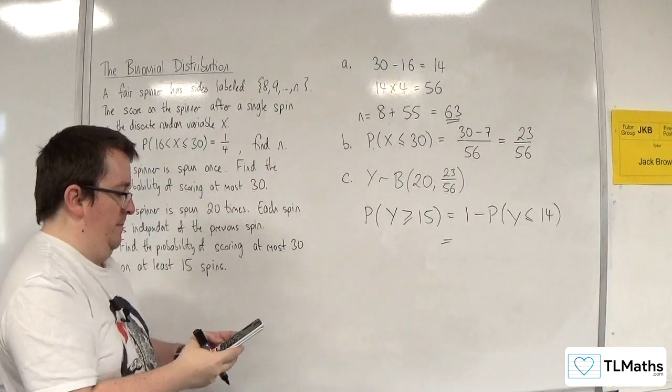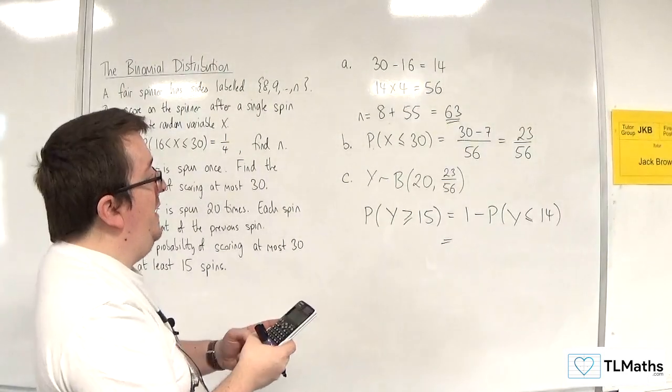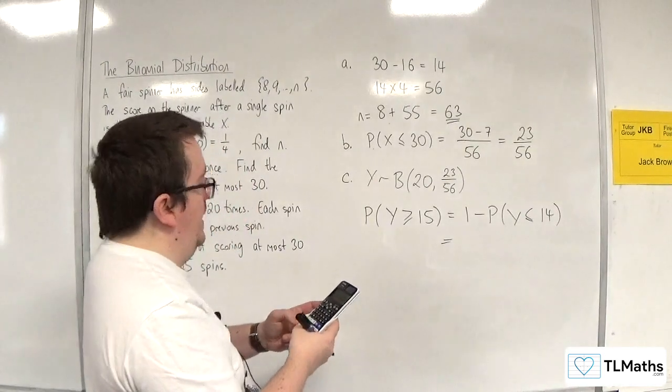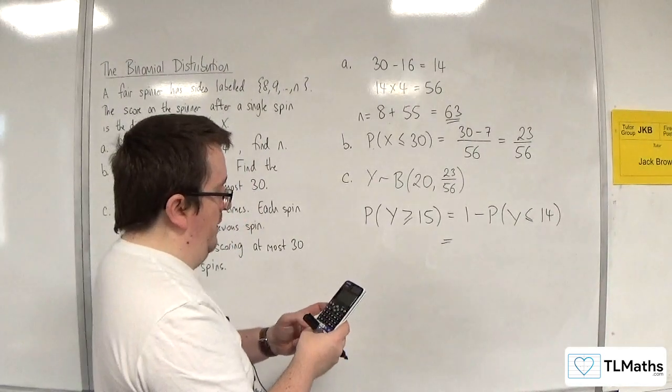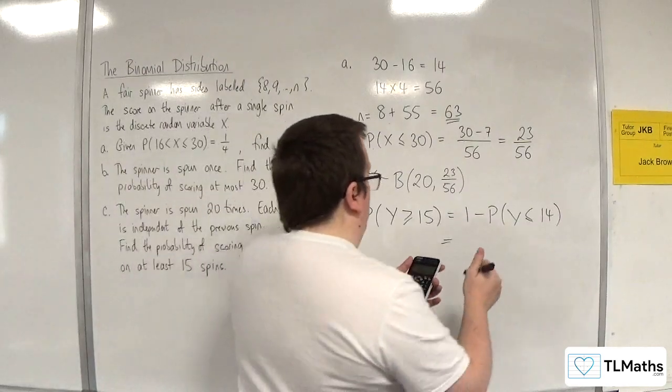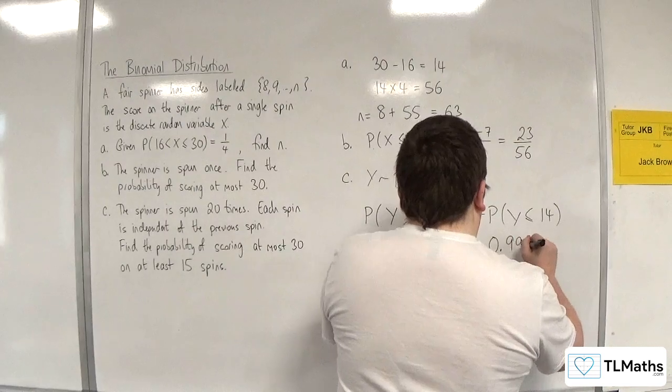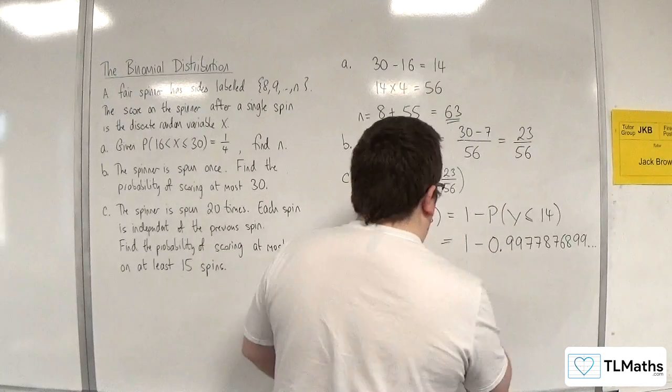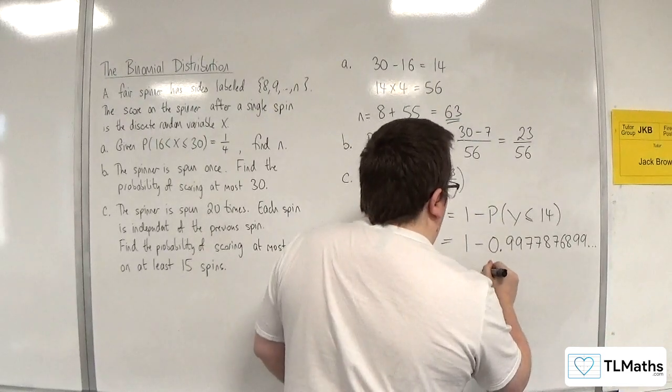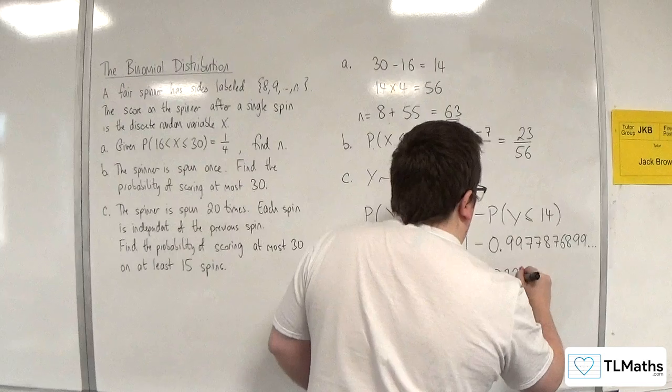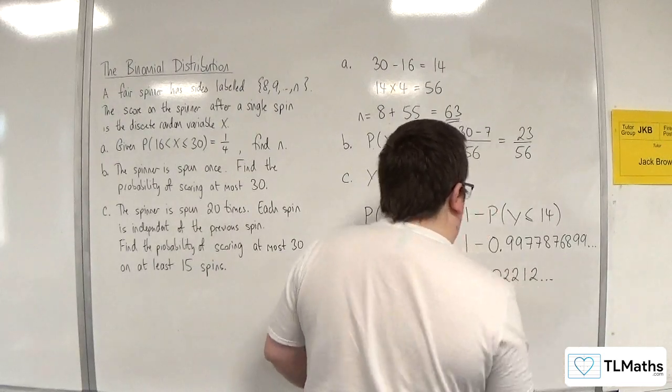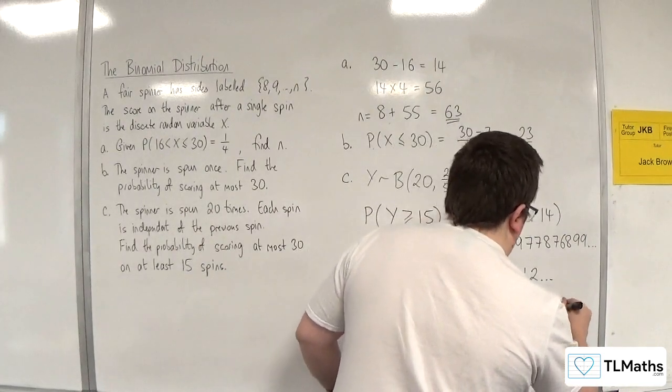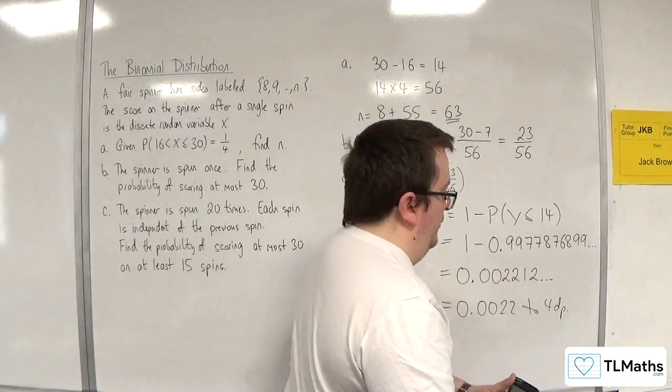So menu number 7, I'm going to go to binomial CD. Go to variable. X I want to be 14, N is 20, and the probability is 23 over 56. So that's one take away 0.9977876899. So that's 0.002212 and so on. So 0.0022 to four decimal places.